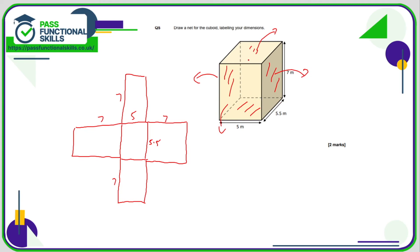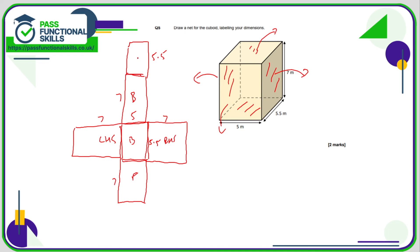The only remaining face is the top, which is five-point-five by five. It can sit on top of either the front or the back face — I'll place it on top since there's more space there. There's the five and there's my five-point-five. If you imagine folding this together — fold here, here, here, and here — this is the base, this is the left-hand side, this is the right-hand side, this is the front, this is the back, and then one final fold here makes the top of the cuboid.